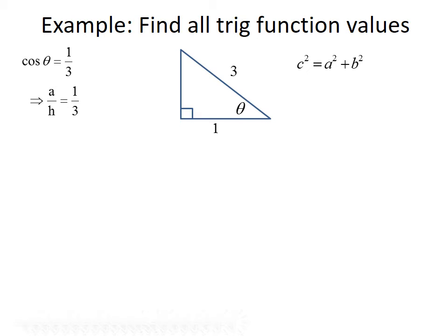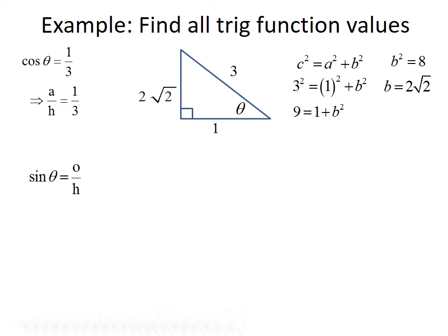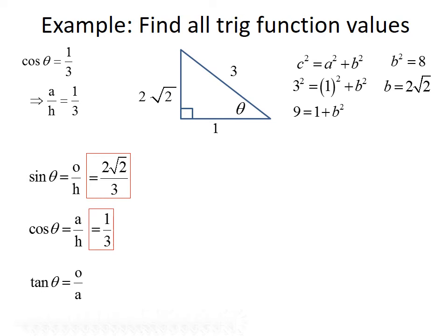Plugging in what we know: 3 squared equals 1 squared plus b squared, so 9 equals 1 plus b squared. Subtracting 1 gives b squared equals 8. Taking the square root gives b equals root 8, which simplifies to 2 root 2. So the opposite side is 2 root 2. Now we can find all trig functions: sine of theta is opposite over hypotenuse, giving 2 root 2 over 3. Cosine of theta is adjacent over hypotenuse, which is 1/3 as given. Tangent of theta is opposite over adjacent, so that's 2 root 2 over 1, or just 2 root 2.